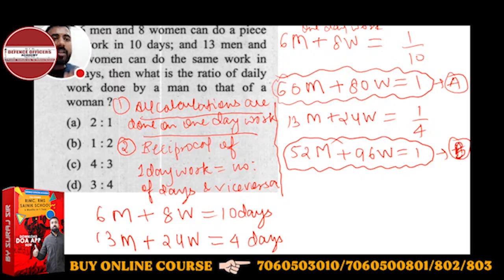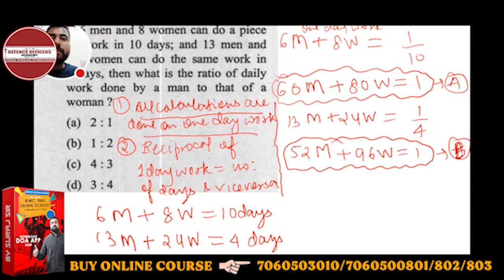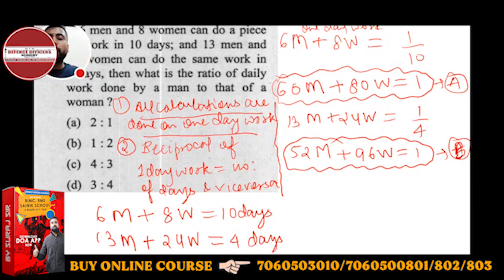In both equation A and equation B, the right-hand side is 1. When the right-hand sides are the same, the left-hand sides are also equal. For example, if A = 2 and B = 2, then A = B.